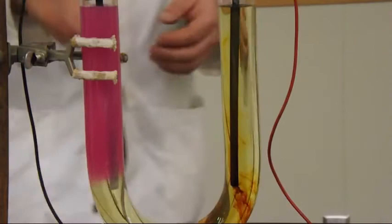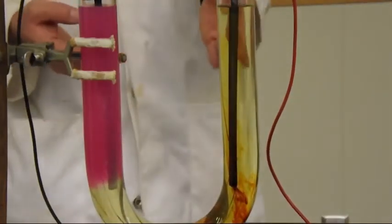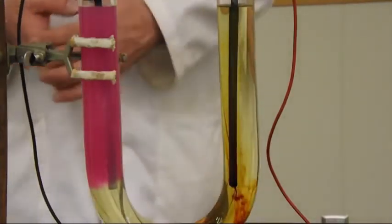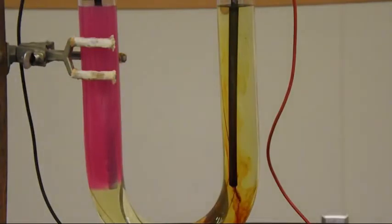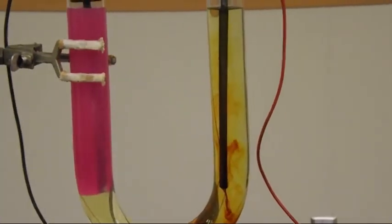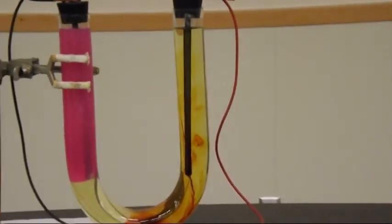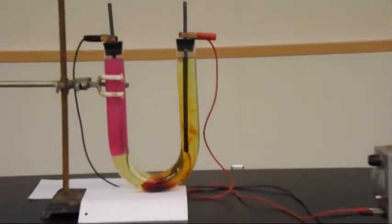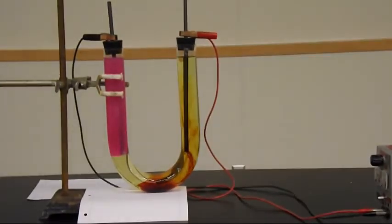So off of the one electrode we've got a gas bubbling off and a basic solution being formed. Off of the other one we've got a brown iodine solid being formed as it goes down. So just going to zoom this out just a tiny bit. You can see the entire cell setup in the region right there. So what's actually occurring?